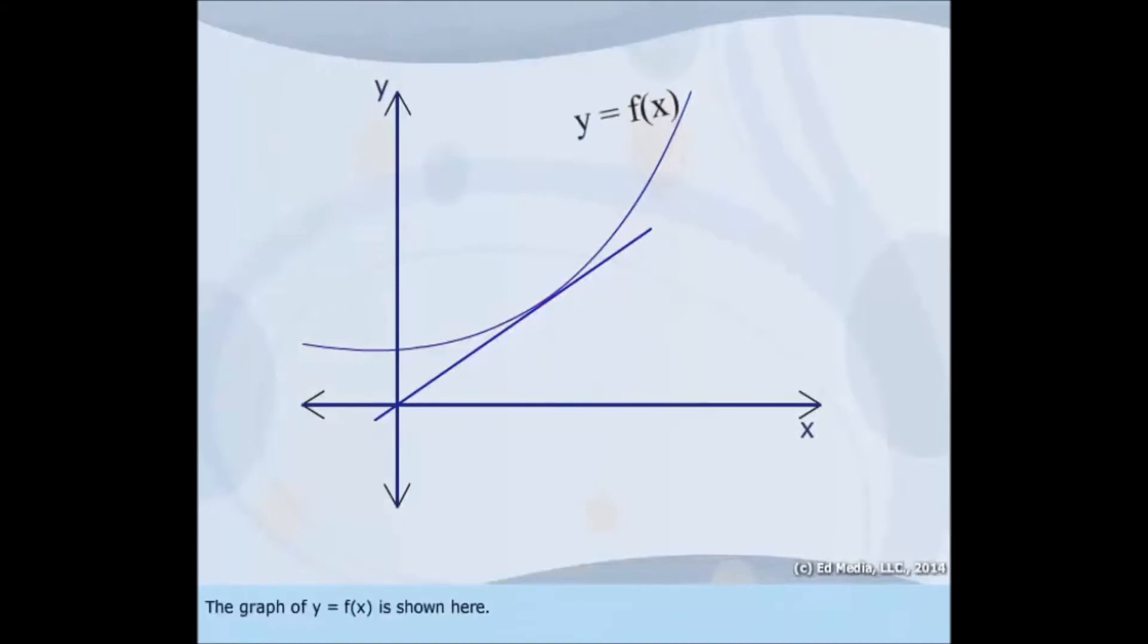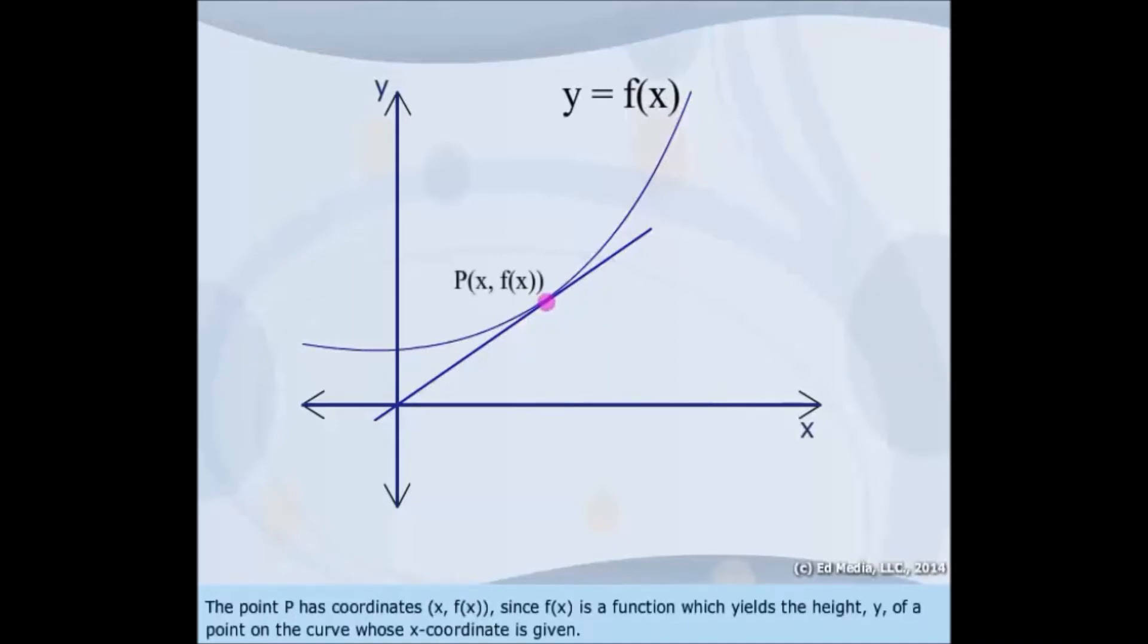The graph of y equals f of x is shown here. The point P has coordinates (x, f(x)), since f(x) is a function which yields the height y of a point on the curve whose x-coordinate is given.